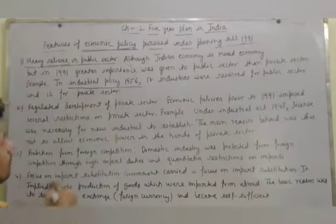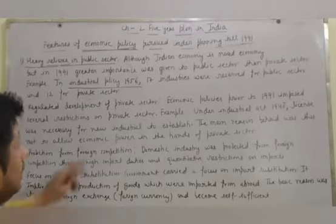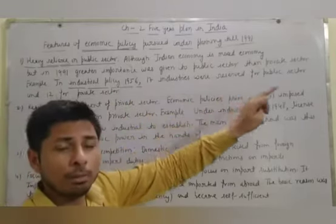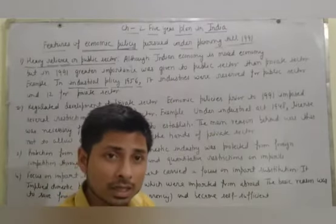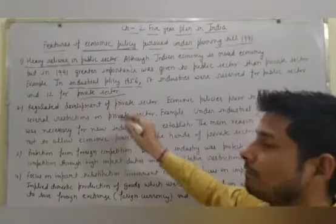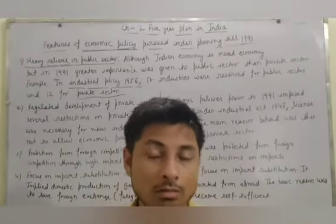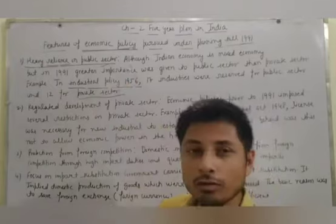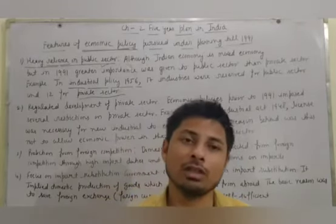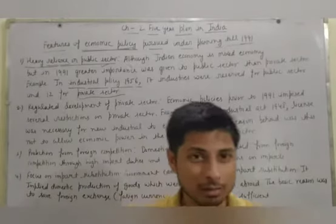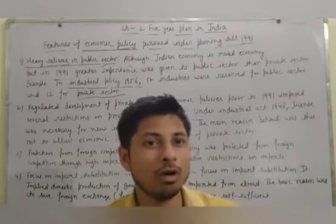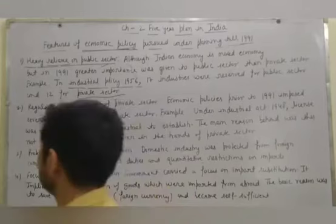For example, according to Industrial Policy 1956, 17 industries were reserved for the public sector and 12 industries were reserved for the private sector. So to explain this point: Indian economy is a mixed economy, but before 1991 greater importance was given to the public sector than the private sector.